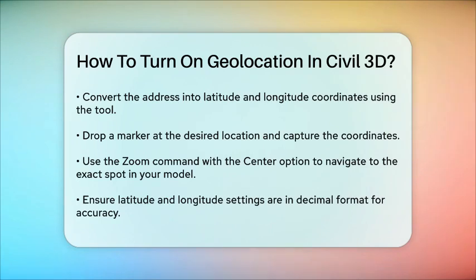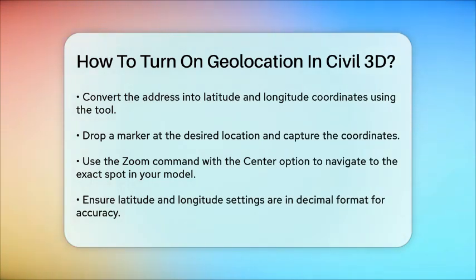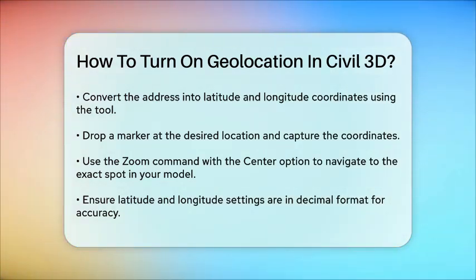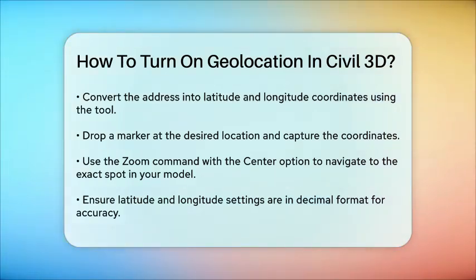By following these steps, you can easily turn on and use the Geolocation feature in Civil 3D to navigate your model using real-world addresses and coordinates. This tool is incredibly useful for positioning yourself accurately within your project area and accessing aerial map information directly within Civil 3D.